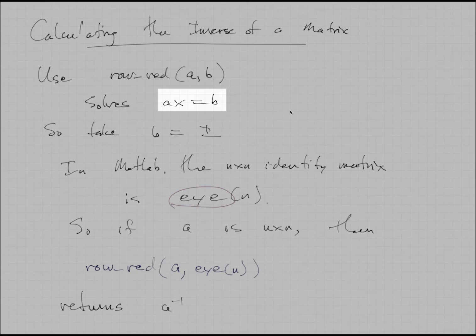Recall that the row red function solves the equation AX equals B, where A and B are given matrices and X is the solution. So all we have to do is take B equal to the identity matrix. Now there's one slight quirk in Matlab. No computer language really wants to use I, a single letter, to denote a function like the identity matrix. So what they do in Matlab is they call it eye, E-Y-E. The function that returns the N by N identity matrix is called eye of N. And therefore, if you want to calculate the inverse of a matrix, you can issue the command row red A comma eye of N, assuming A is an N by N matrix, and this will return the inverse.